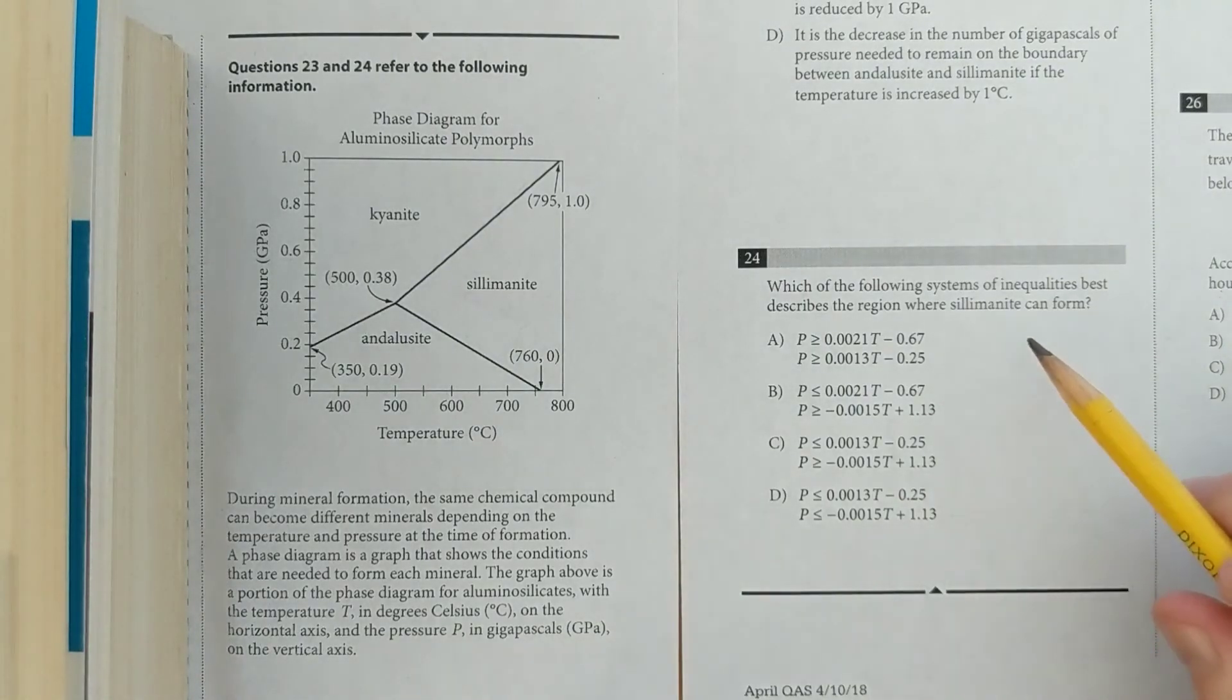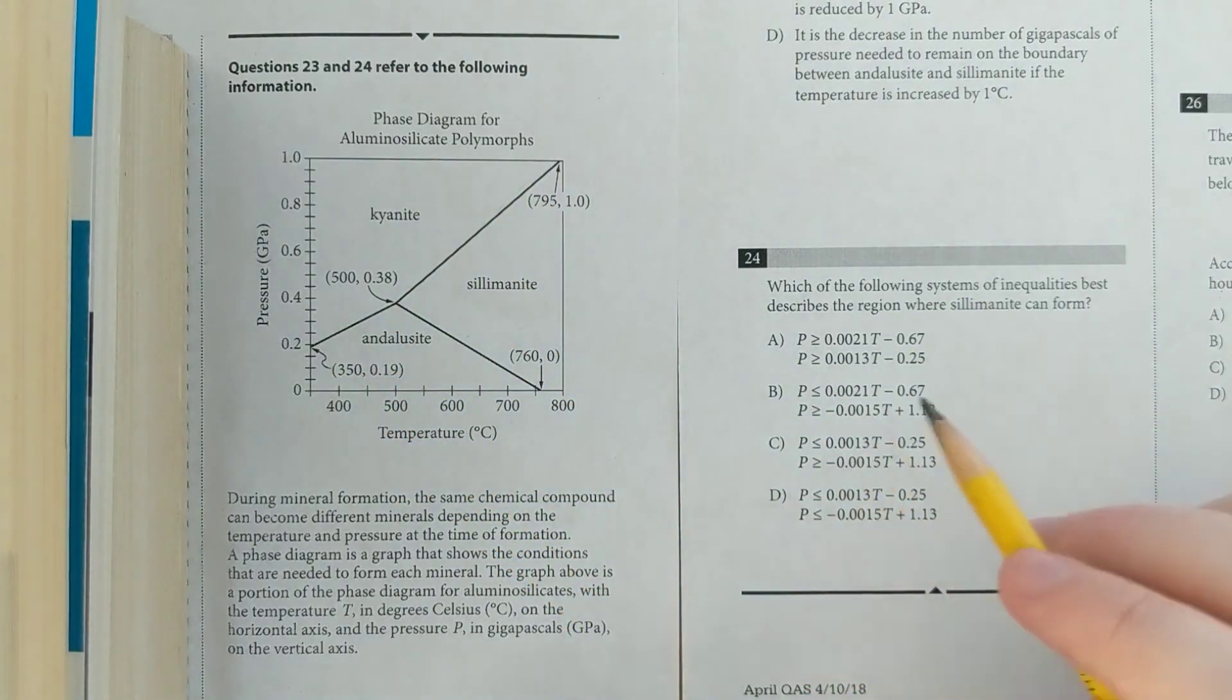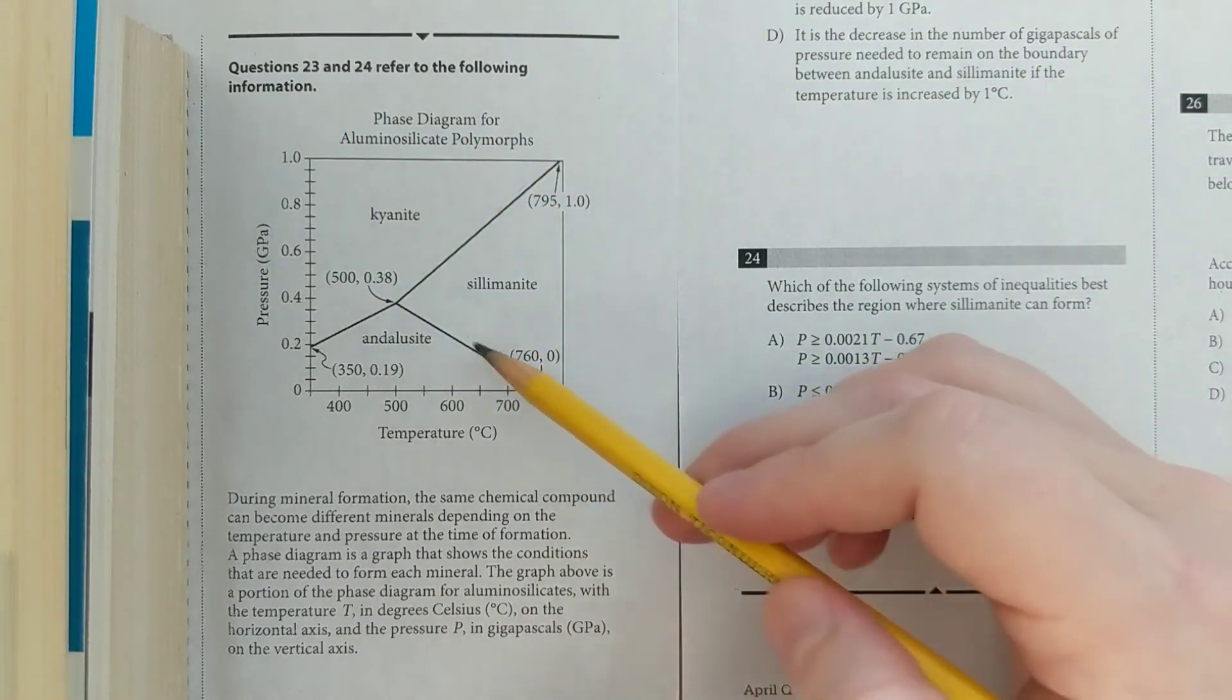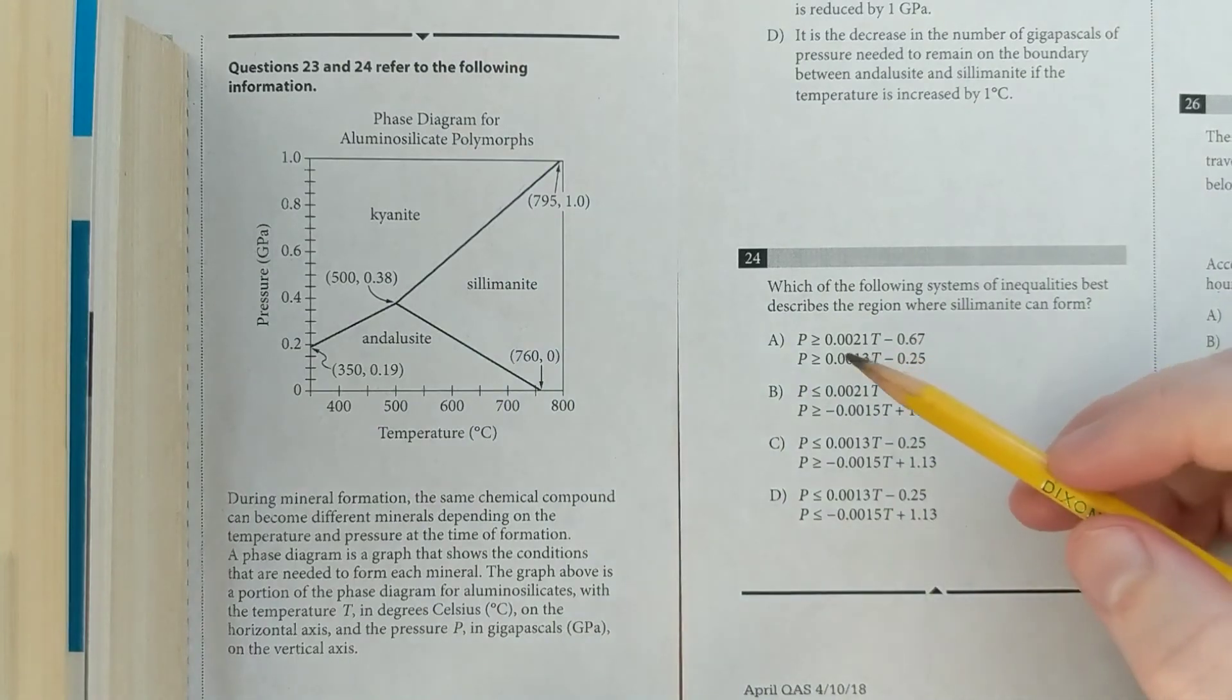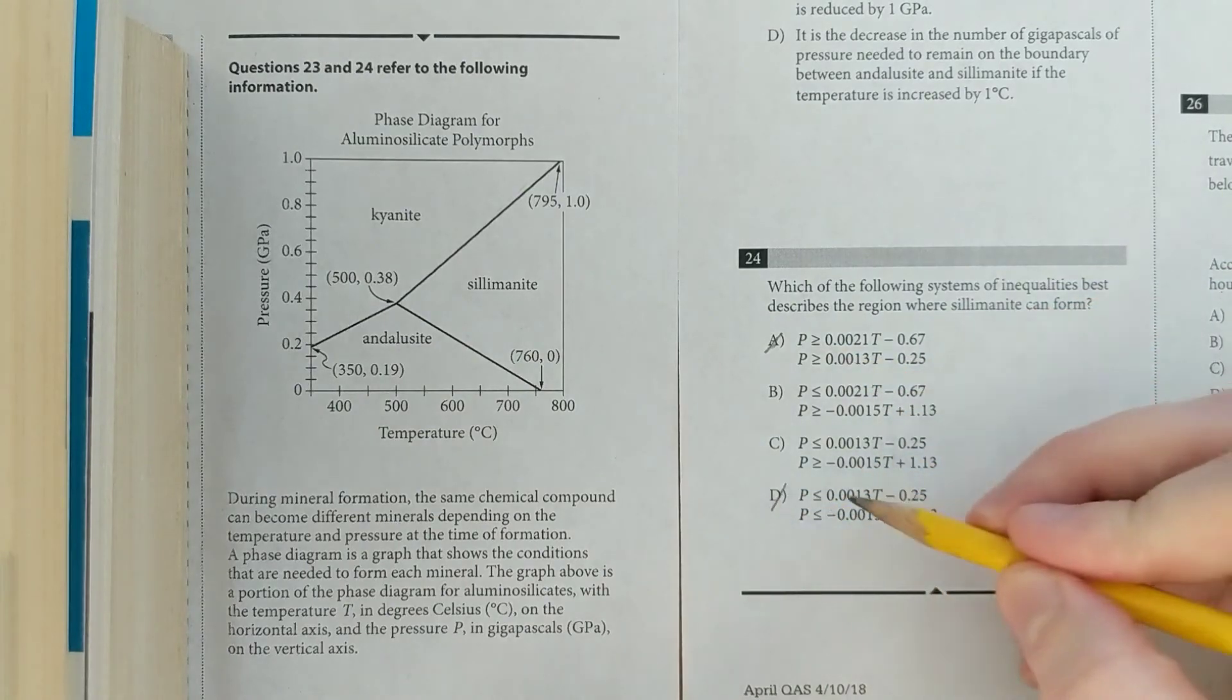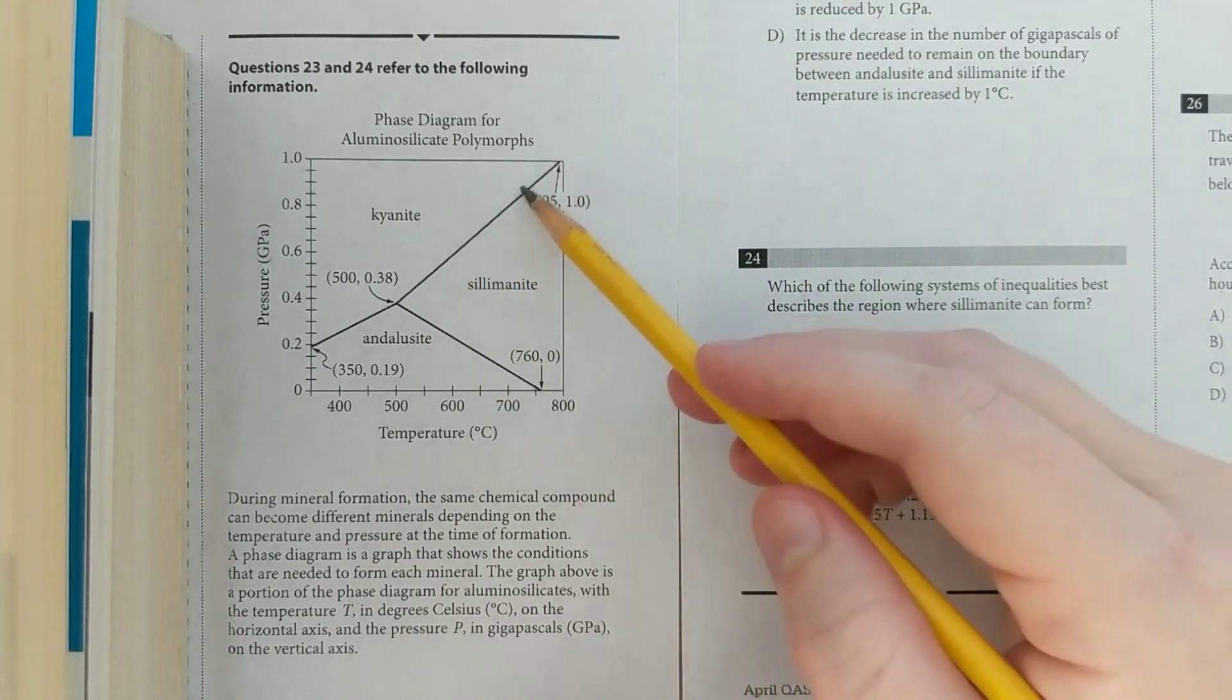Number 24 is another system of inequalities. It refers to this graph that they irritatingly put on a different page. But anyway, they want to know which of the following systems of inequalities best describes the region where this thing can form. So this region is less than or equal to this line and greater than or equal to that line. So you can eliminate any answer choices where the signs are going in the same direction. It can't be A because those are both greater than or equal to. It can't be D because those are both less than or equal to. So looking at B and C, you can see that the second inequality is the same for both. That means we can just focus on the first inequality, the one that's less than or equal to. So that's this line.